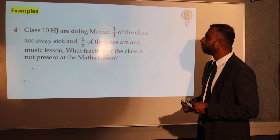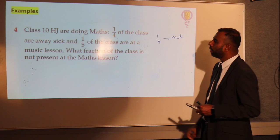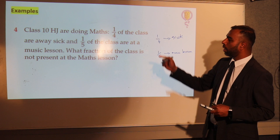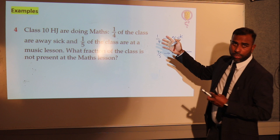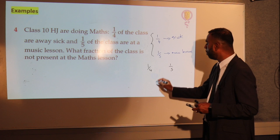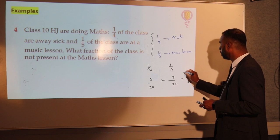Example 4 — the last example. Class 10HJ are doing maths: 1 quarter of the class is away sick and 1 fifth of the class is at the music lesson. What fraction of the class is not present? Once again, two fractions with different denominators. The common denominator would be 20, so 1 quarter becomes 5 over 20, and 1 fifth becomes 4 over 20. Adding them makes 9 over 20. Therefore 9 twentieths of the class is not there.